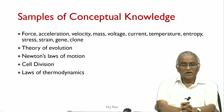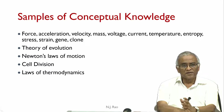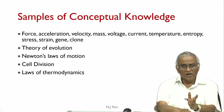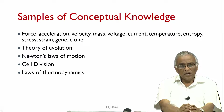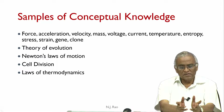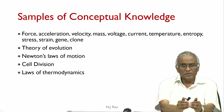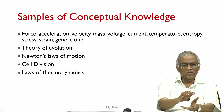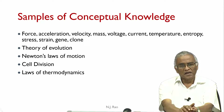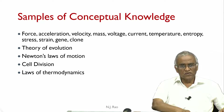Samples of conceptual knowledge include: force, acceleration, velocity, mass, voltage, current, temperature, entropy, stress, density, gene, clone — any number of concepts from any subject. At a higher level, you have a theory of evolution, Newton's laws of motion, cell division, and laws of thermodynamics. Some principles put together become a law, a theory, a model, or a schema. This is what we call conceptual knowledge.